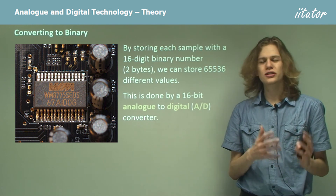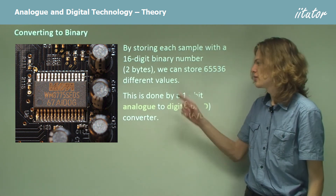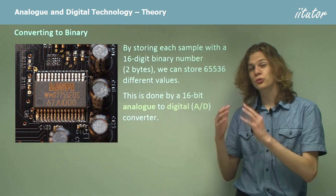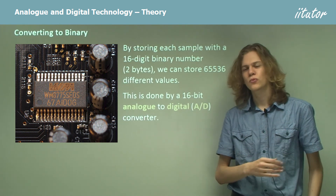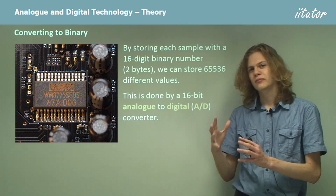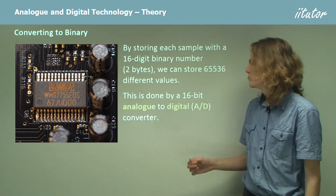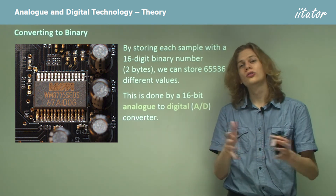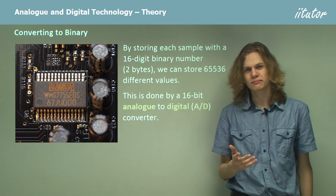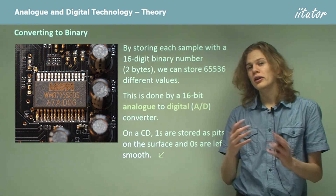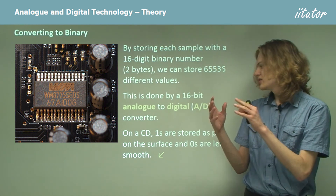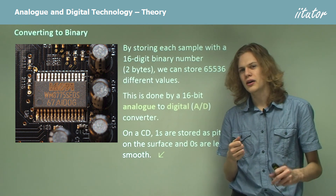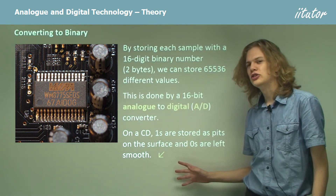We use an analog-to-digital converter to convert the analog signal to the digital signal. It takes the analog signal, cuts it into slices or samples, measures the amplitude at each point, and assigns it a number from 0 to 65,000 or so. Once it has a whole list of numbers, it converts those into binary. On a CD, a 1 is represented by a tiny pit on the surface of the CD, and a 0 is represented by the lack of a pit.